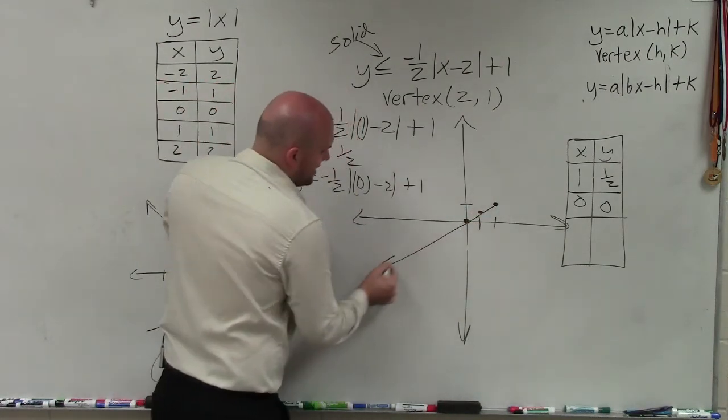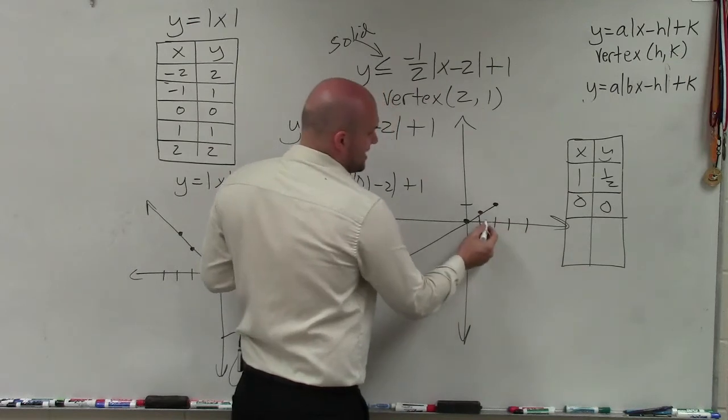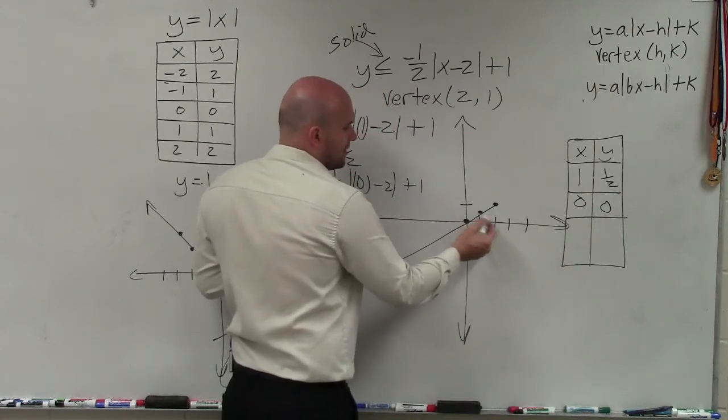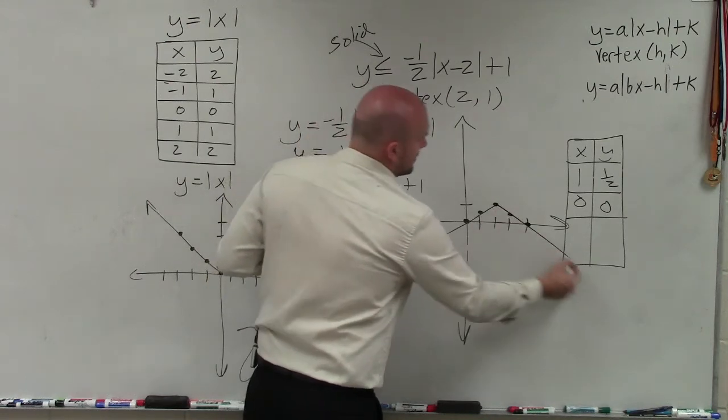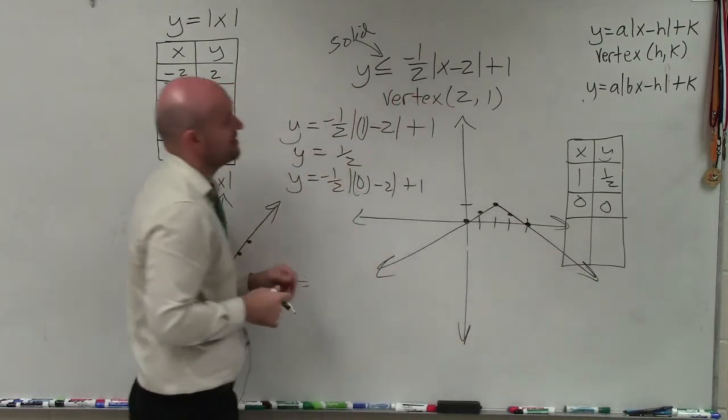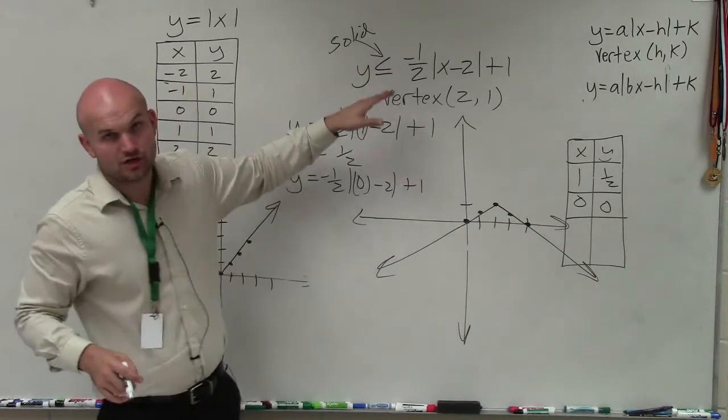So I know I have two points going this way. I can easily just reflect them over. So when I went over to 1, I went up 1/2. So I go over 1 here, up 1/2. And then this one will be at 0. And I can graph it just fine in that direction. Remember, I graphed it solid because that's the way I determined.